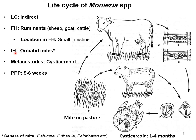The intermediate host for this parasite is the oribatid mite, also known as the forest mite. The infective stage is the cysticercoid, and the time required for completion of the life cycle is five to six weeks. The adult parasite is located in the small intestine of the final host — sheep, goat, cattle, or other ruminants — and gravid proglottids are passed out through feces.